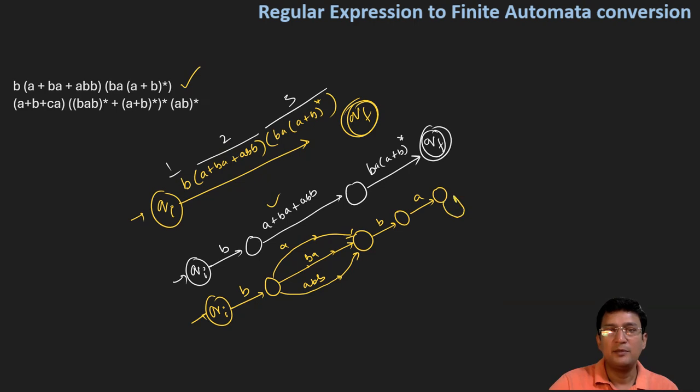And then after this, closure of a plus b. So closure of a plus b means a or b. Since this is a closure, we can say that with epsilon we can reach the final state. After a, one more epsilon transition back can be shown for this closure.